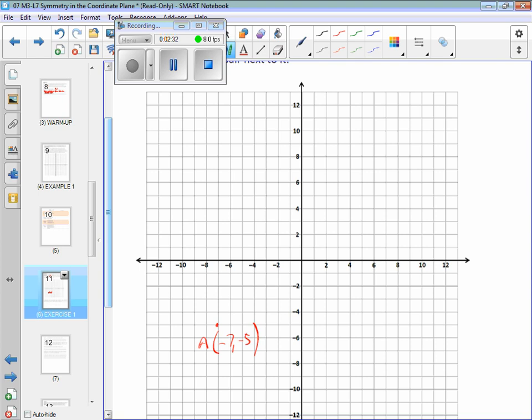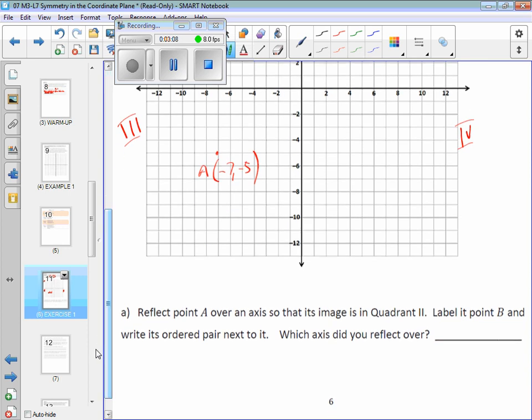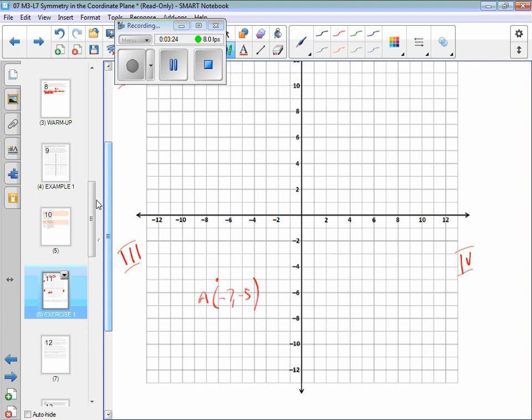What I would also do, get into the habit of doing, it's going to make things just easier for you. As soon as you get a coordinate plane, label your quadrants so you know where everything is. And they actually kind of give you a clue when they tell you that negative 7, negative 5 is in quadrant 3. Okay, you're going to do your first reflection. Reflect point A over an axis so that its image is in quadrant 2.